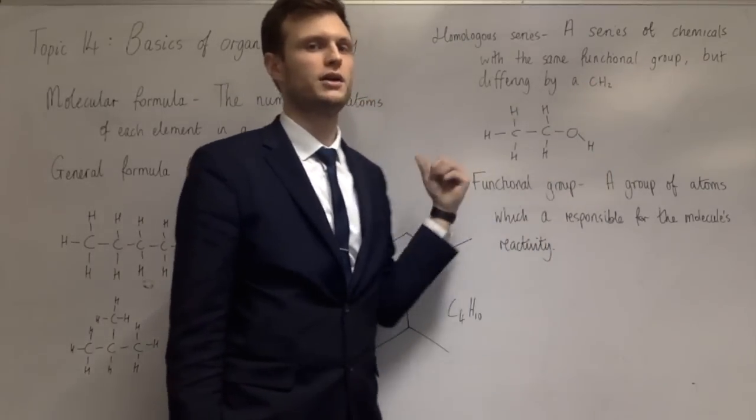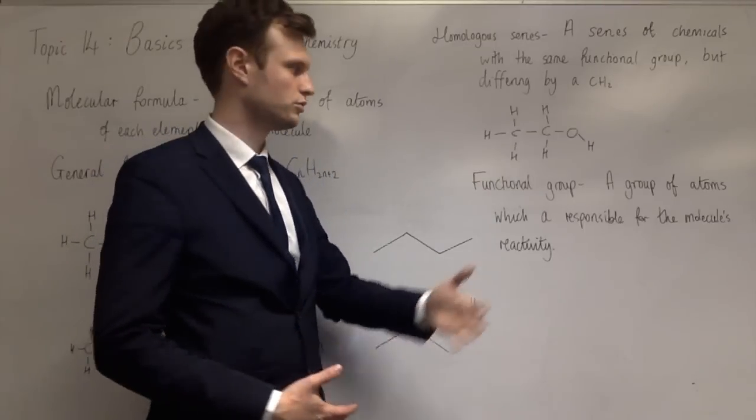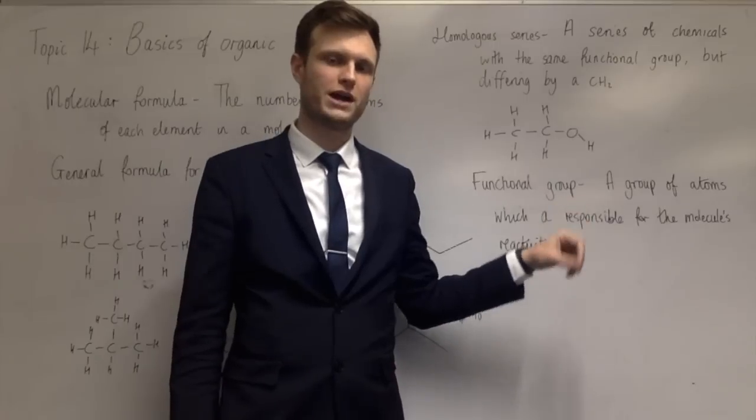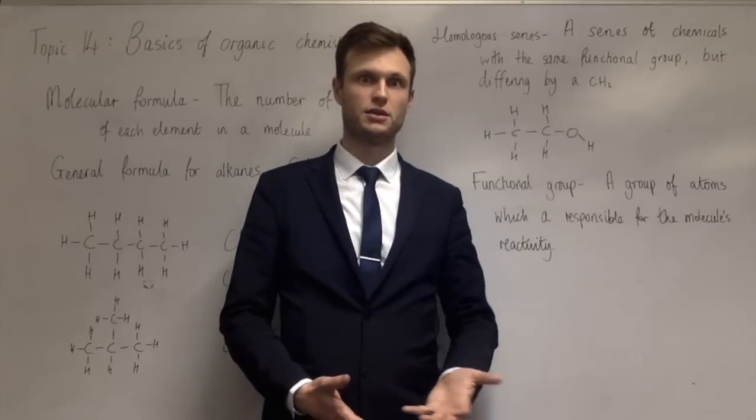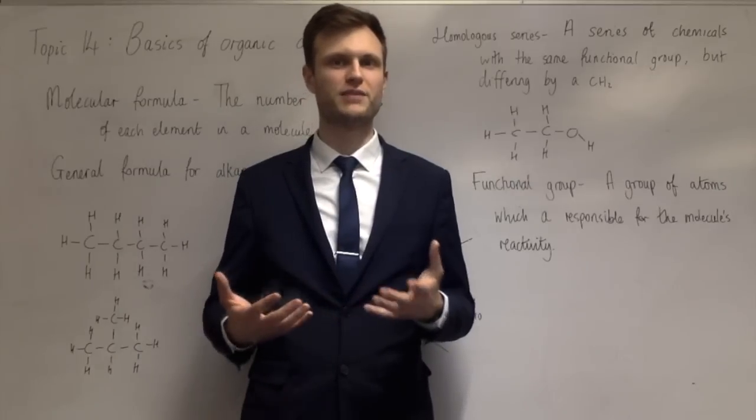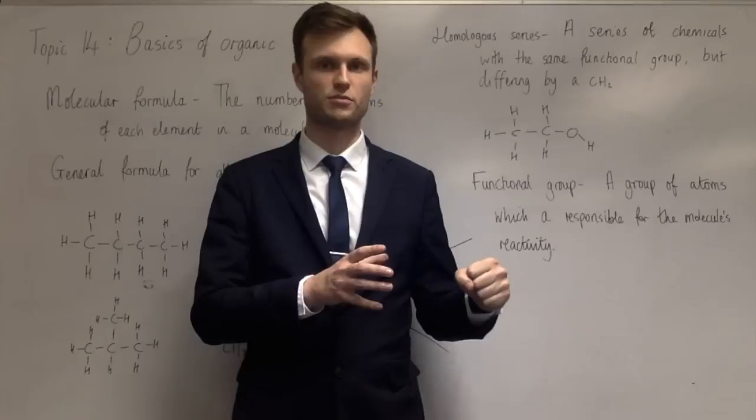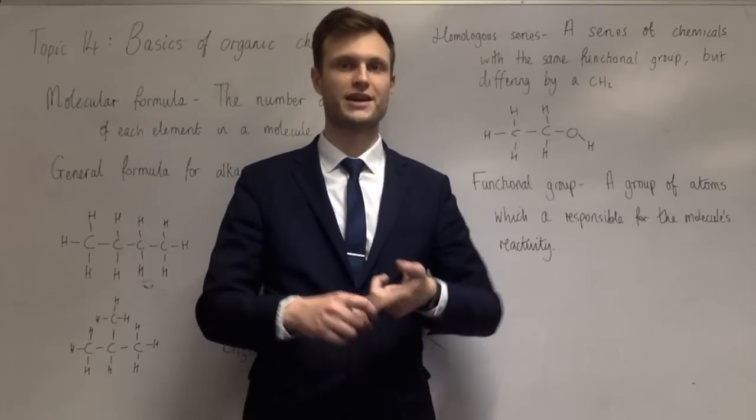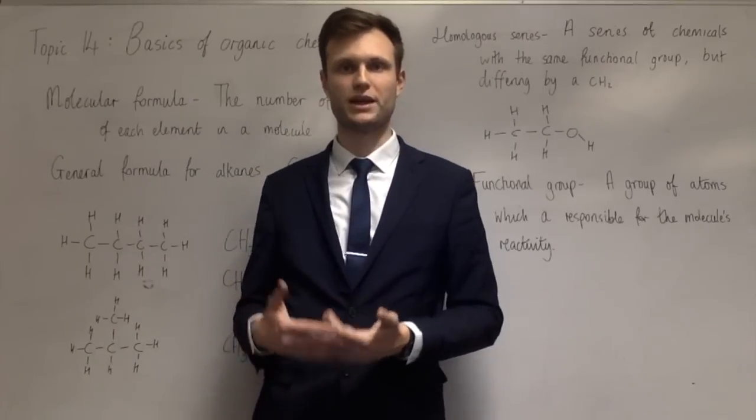I've used the term functional group. A functional group is the group of atoms which is responsible for a chemical's reactivity. So the OH is what makes this alcohol react like an alcohol. It's the carbon-carbon double bond in alkenes which makes it react like other alkenes. The next term is alkyl group. An alkyl group, I think of it as basically a straight chain alkane but with one hydrogen taken off, and so it bonds on to something else. So a CH3 is a methyl group, C2H5 is an ethyl group. They contain carbon-carbon single bonds and carbon-hydrogen single bonds. Three would be a propyl group.